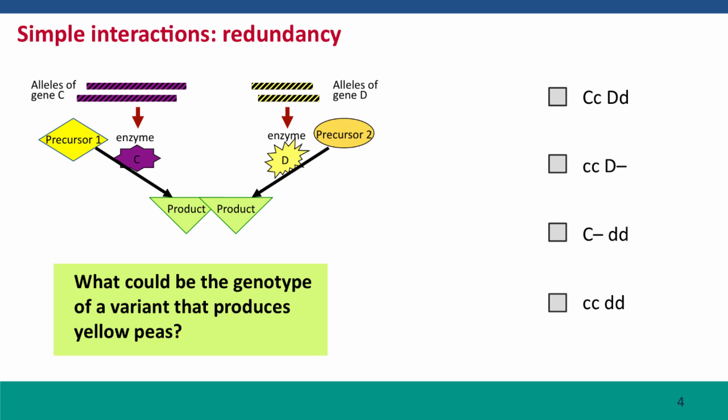Now, what would be the genotype, what could be the genotype of a variant that produces yellow peas? If the product is the green pigment normally found in green peas, what could be the genotype of a variant that instead produces yellow peas? And there's only one correct answer. Because either gene can do the job, you're only going to get a mutant where the job doesn't get done, the job being synthesis of the green pigment, if both pathways are completely knocked out.